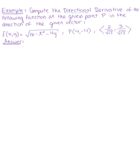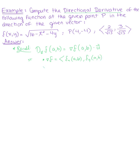Compute the directional derivative for the following function at the given point P in the direction of the given vector. Let's start by recalling that our directional derivative D in the direction of a vector u of some function at a point P defined as (a, b) is equal to the dot product of the gradient at point (a, b) dotted with unit vector u. The gradient is the vector whose components are the partial derivatives at this point, and vector u must be a unit vector, so its magnitude must equal 1.